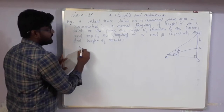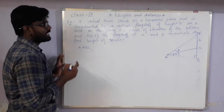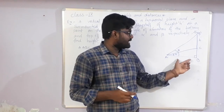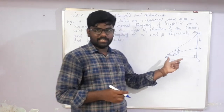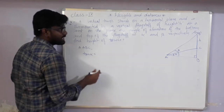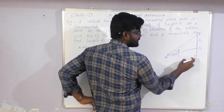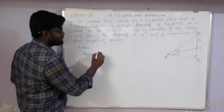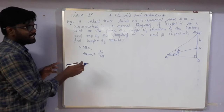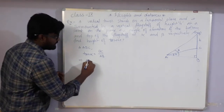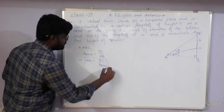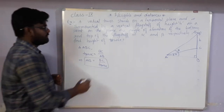We take triangle ABC and apply tan alpha. We are taking tan alpha because it relates to side AB. What is tan alpha? Opposite is BC and adjacent is AB, so tan alpha = BC / AB. We want to find AB. Doing cross multiplication: AB = BC / tan alpha.